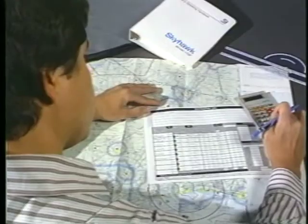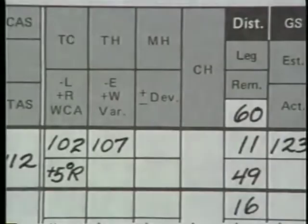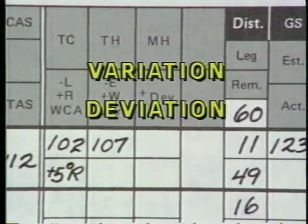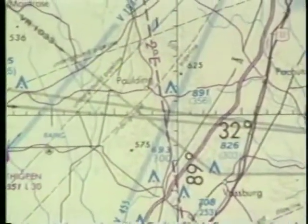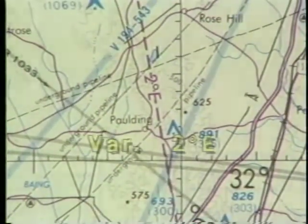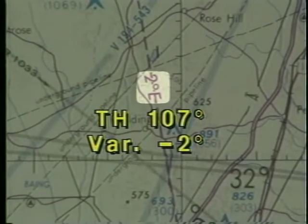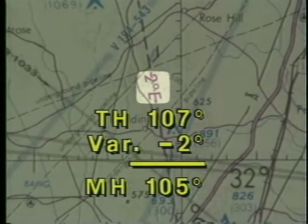To compute these values, you'll use the same procedures as described in the program on flight computers. To conclude the direction calculations, convert your true values to magnetic by adjusting for variation and deviation. Lines of variation are printed on sectional charts and labeled in degrees west or east. When you apply variation to the true heading, westerly values are added and easterly values are subtracted. This line represents two degrees easterly variation — therefore, subtract it from the true heading of 107 degrees to get a magnetic heading of 105 degrees. A good memory aid is: east is least and west is best.